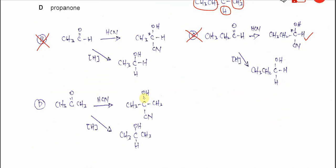For D, we have propanone. When HCN is added to propanone, it will form this. This one has no chiral center. This cyanohydrin has no chiral center.